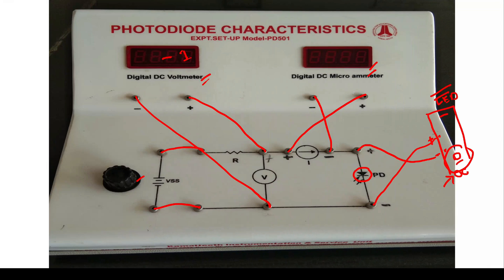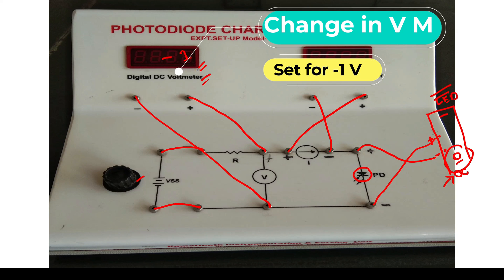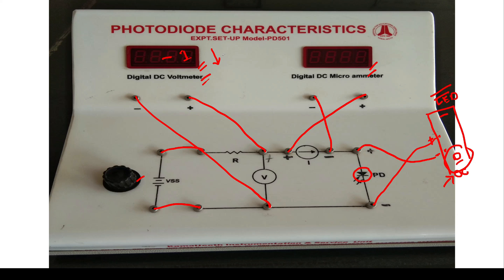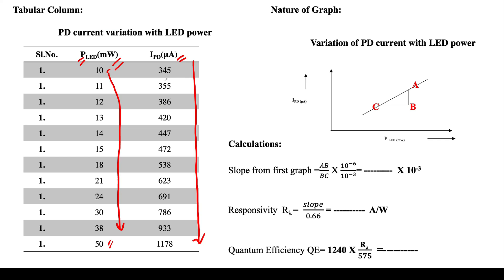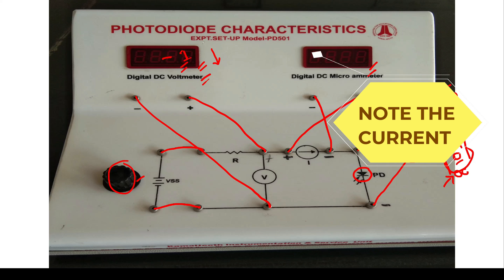One more thing: whenever you increase the LED intensity, there will be a change in the DC voltmeter—that means there will be a reduction in the voltmeter. So you need to maintain it each time whenever you change the LED current from 10 to 11, 11 to 12, 12 to 13, 13 to 14. At the same time, voltage will go on reducing, so by using this knob you need to maintain this amount of voltage and then note down the current.